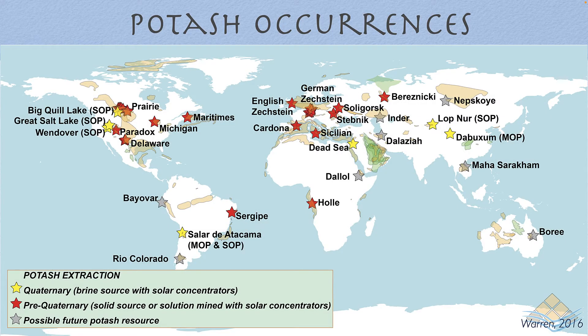Occurrences of the various potash salts can be divided into two basic sets of processes: the brine-sourced versus the solid or rock-sourced forms. The yellow stars on this map indicate the brine sources whereby various types of hypersaline brines are processed to manufacture potash salts - either muriate of potash or sulfate of potash. The solid ore sources tend to be pre-Quaternary and are mostly associated with a sylvinite or sylvite rather than a carnalite or carnalitic ore source. This map encompasses the various deposits we will discuss in subsequent modules.